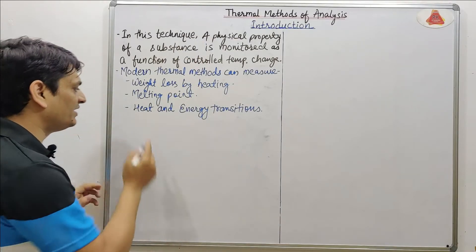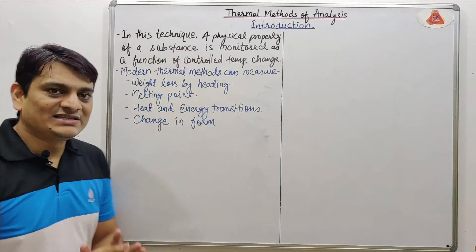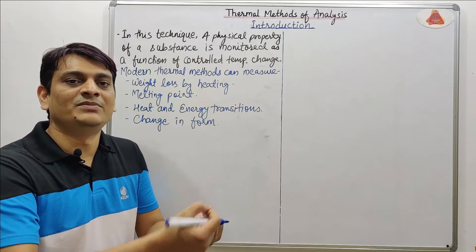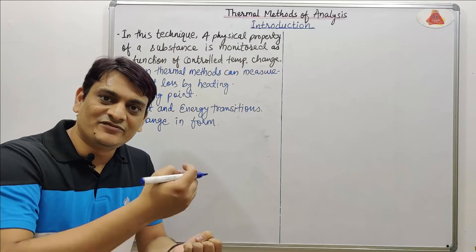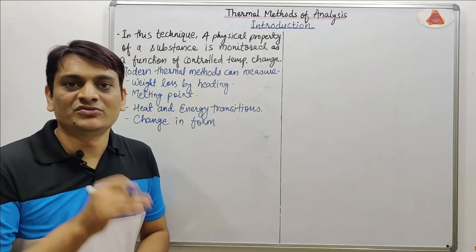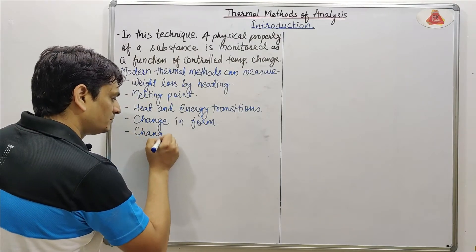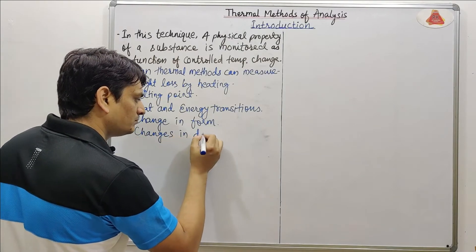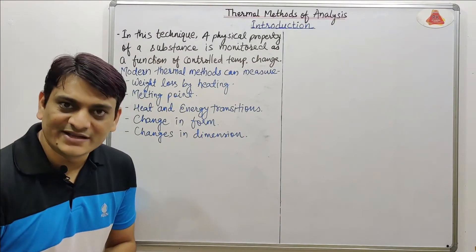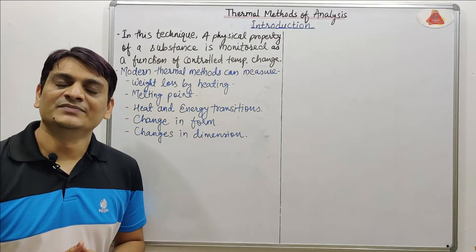The fourth property is change in form. For example, if we have a solid sample and after heating it will be converted into liquid, or converted directly from solid to gas, there will be a change in form, and that can also be measured by using these techniques. Dimension is also a physical property which can be changed by heating or change in temperature, and it can also be determined by using this technique.